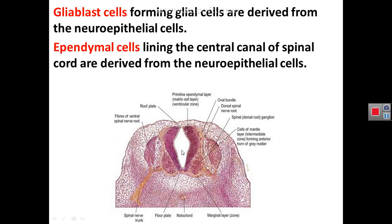In addition to neuroblasts forming neurons from the mantle zone, the neuroepithelium also forms glioblasts that give rise to glial cells. The neuroepithelial cells lining the neural tube also form ependymal cells that line the central canal of the spinal cord and the ventricles of the brain, including the aqueduct of Sylvius of the midbrain.